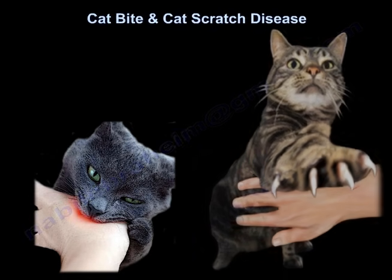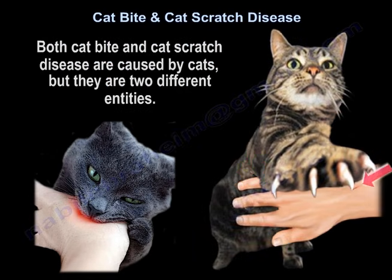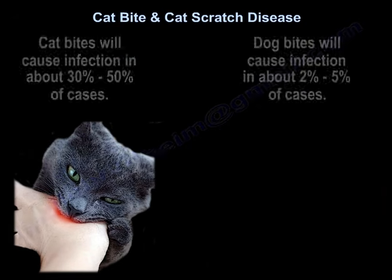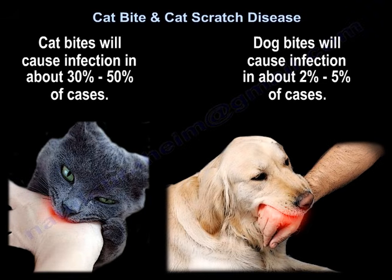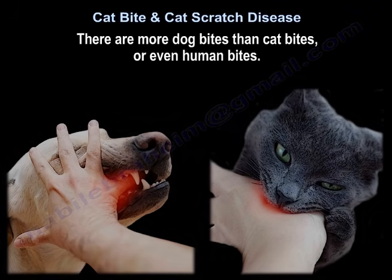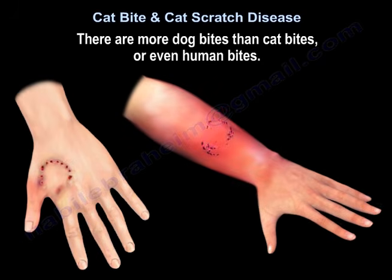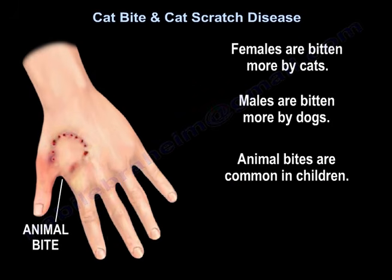Cat bite and cat scratch disease are both caused by cats but are two different entities. Cat bites cause infection in about 30 to 50 percent of cases, while dog bites cause infection in about 2 to 5 percent of cases. There are more dog bites than cat bites or even human bites. Females are bitten more by cats; males are bitten more by dogs.